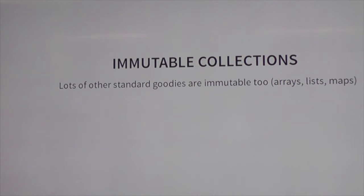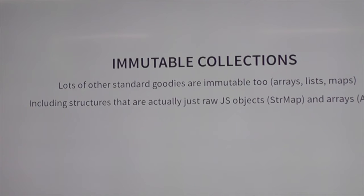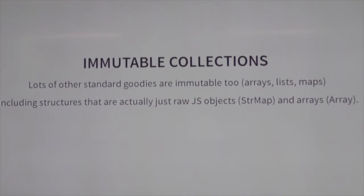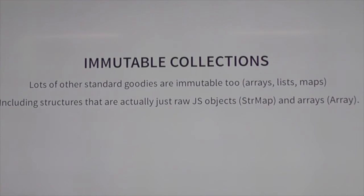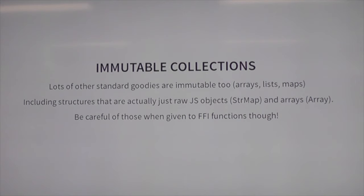There's also all the immutable data structures that you know and love: arrays, lists, and maps. Some of these are just very close to JS objects — StrMap is literally just an object, and array is an array. PureScript takes care of copying when you change it. It can be slow, but there are different structures you can trade off depending on whether you're updating or accessing things in certain ways. Be very careful when you give these raw objects to FFI functions, because they can do whatever they want with them. If they mutate it, they can do weird and bad things to you.